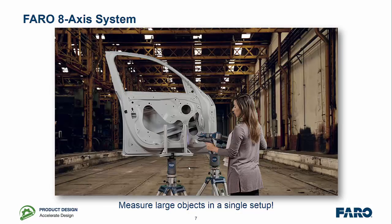With regards to measuring larger objects it makes it easier because in an instance like this we may have had to scan one side, turn it over, scan another side and then register the two halves back together. Now with the 8-axis system we don't have to do that.